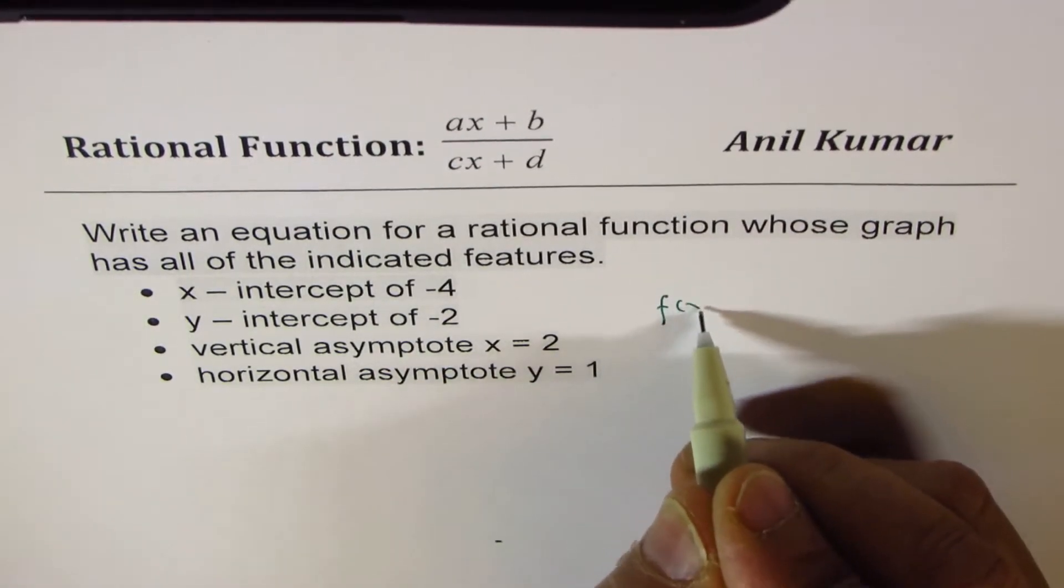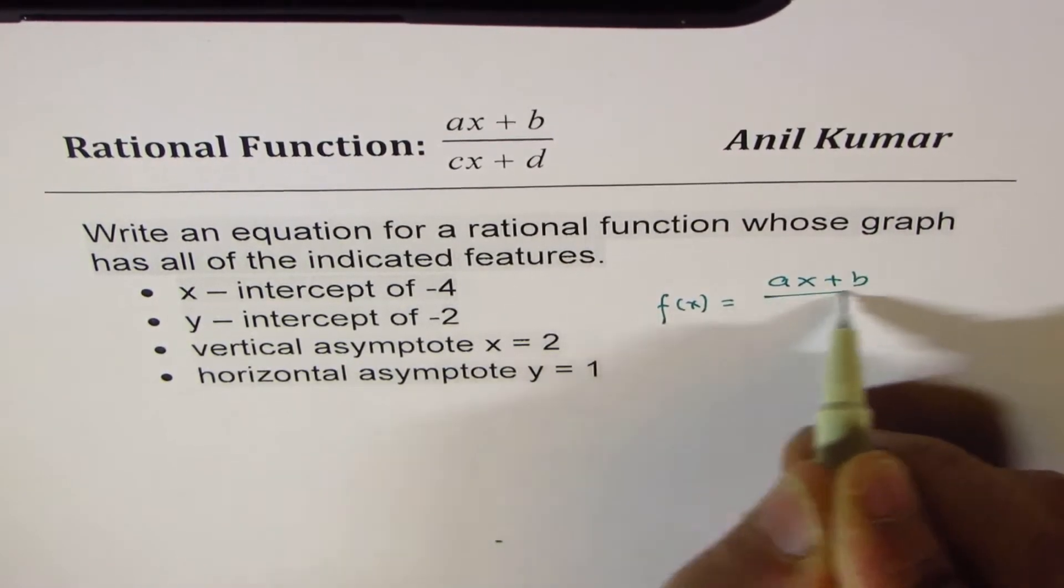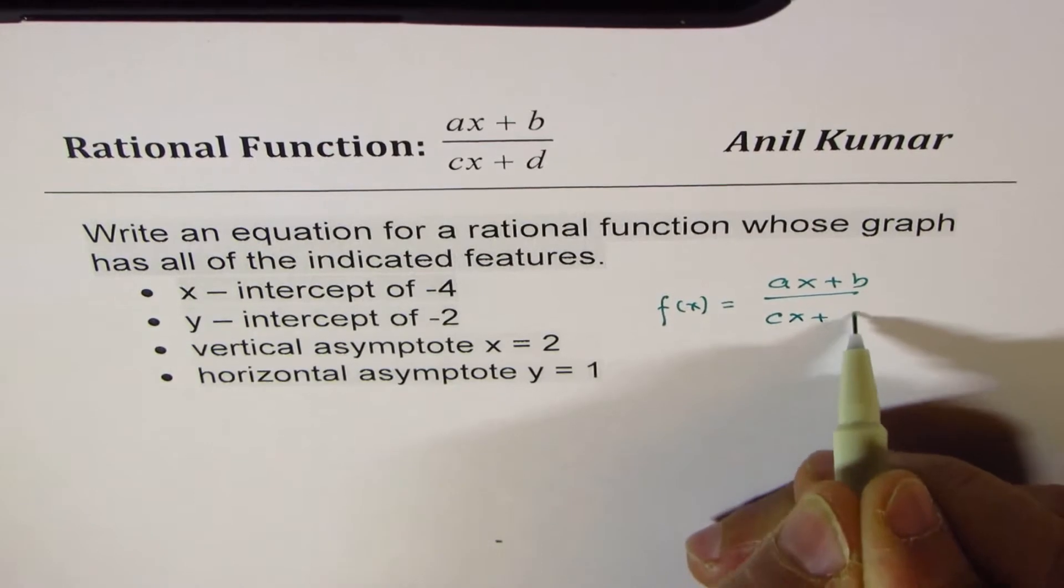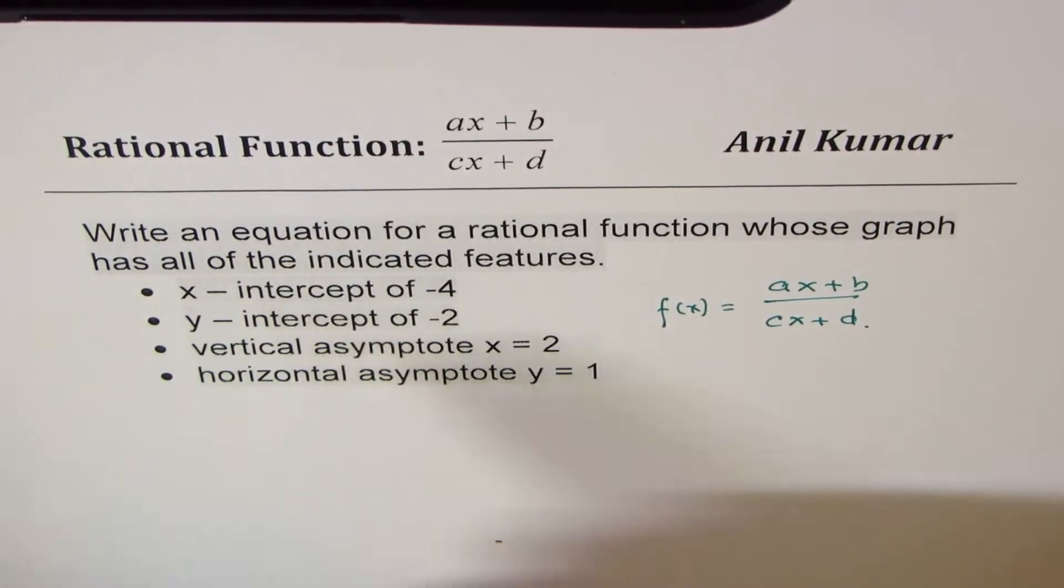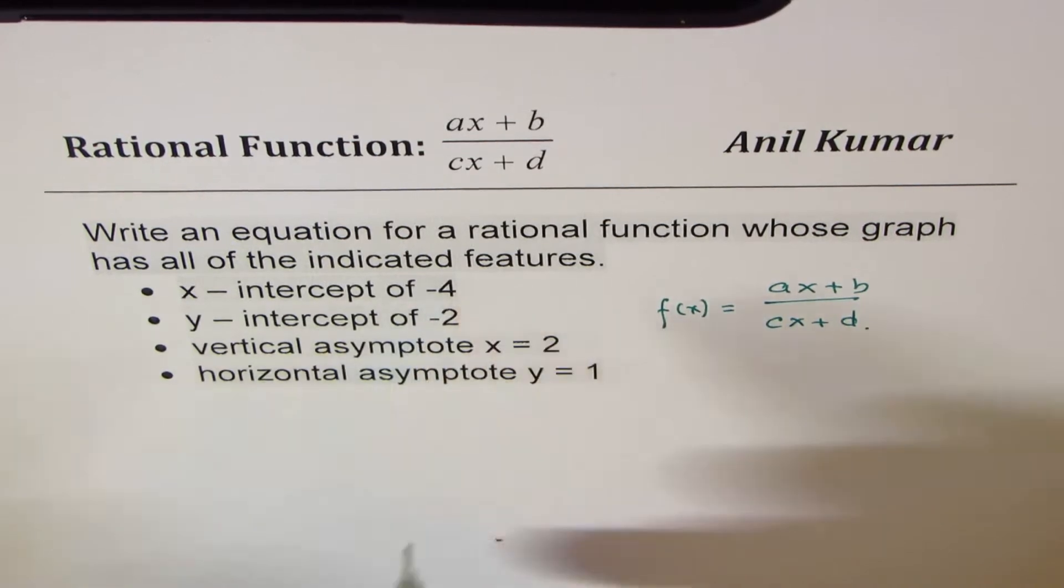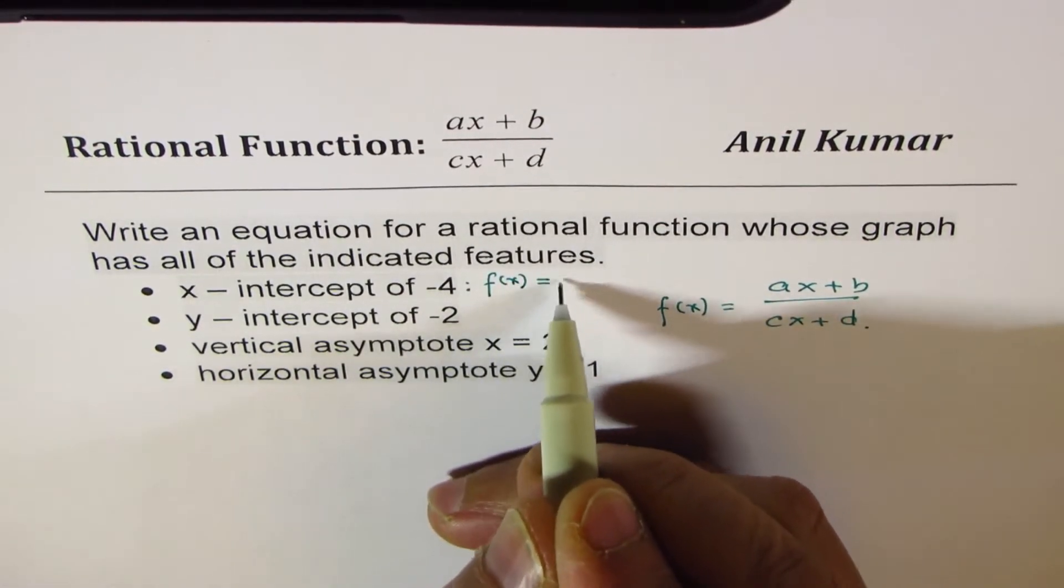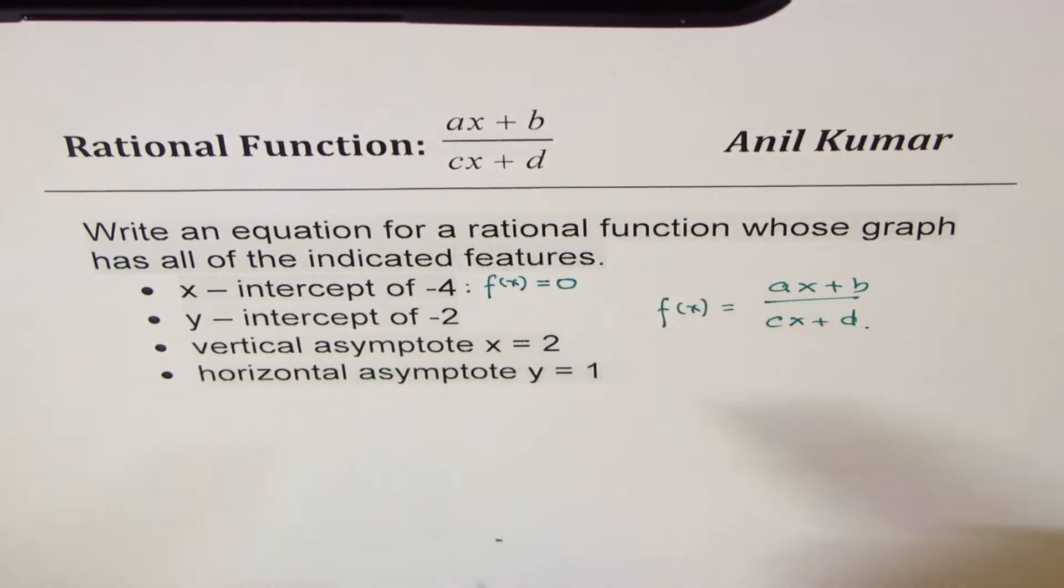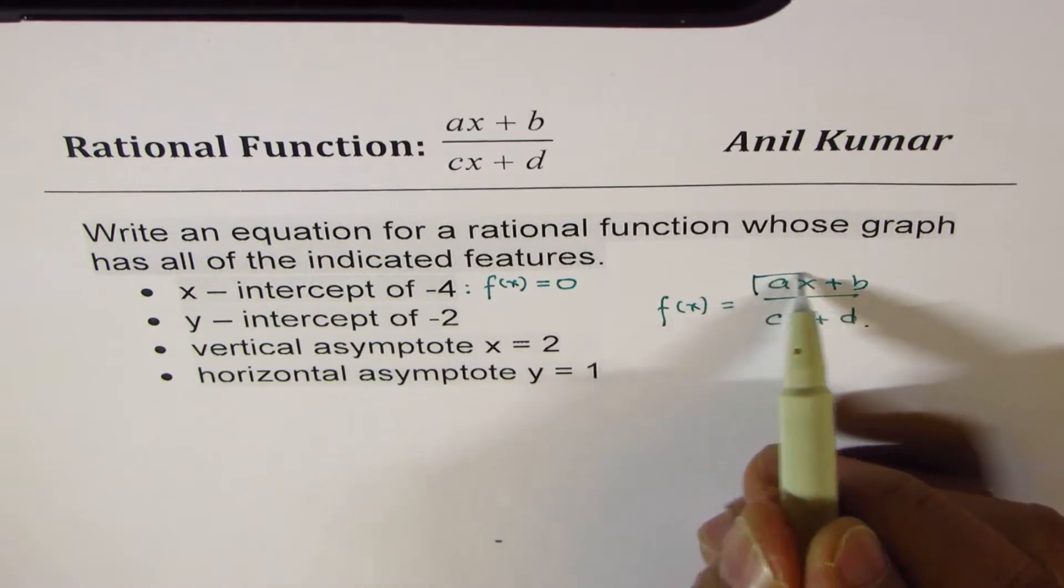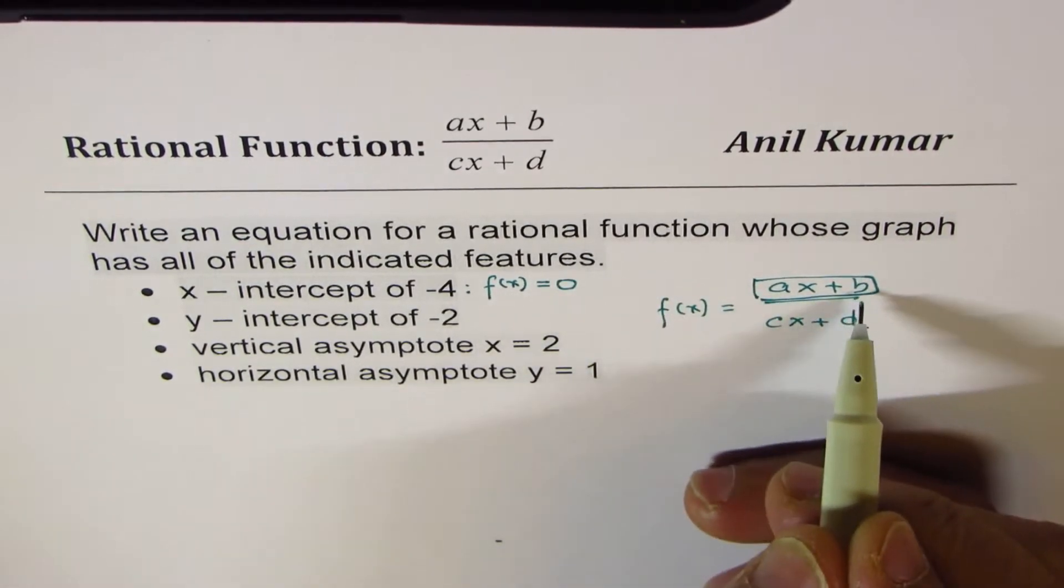We will write the equation in the form of f of x equals to ax plus b over cx plus d. Now when we say that x intercept is minus 4, it means what? It means that f of x is equal to 0, and that basically means that ax plus b is equal to 0. So that means ax plus b is 0.